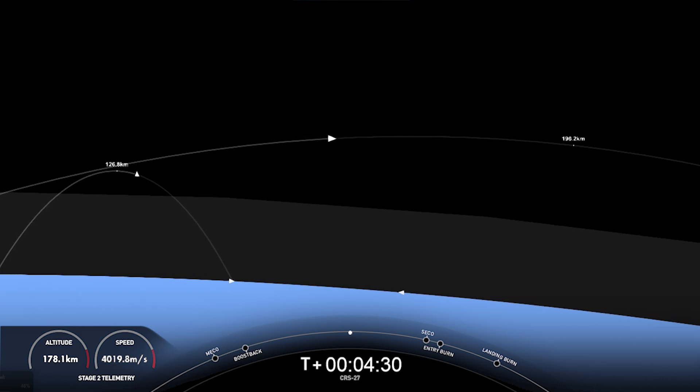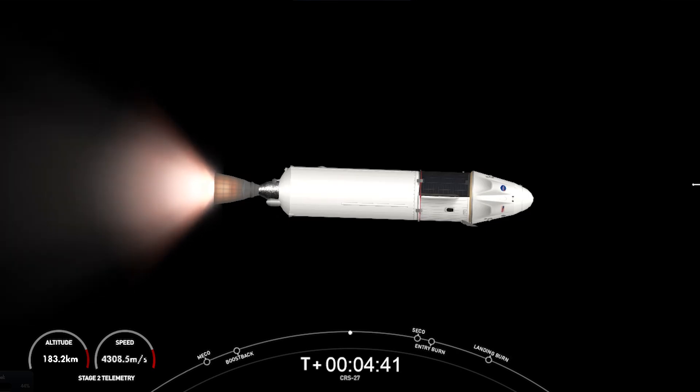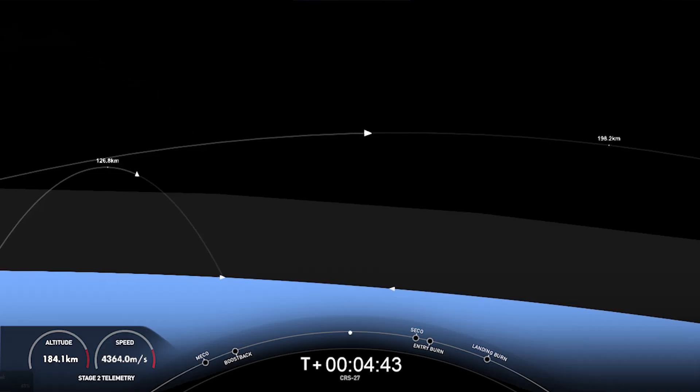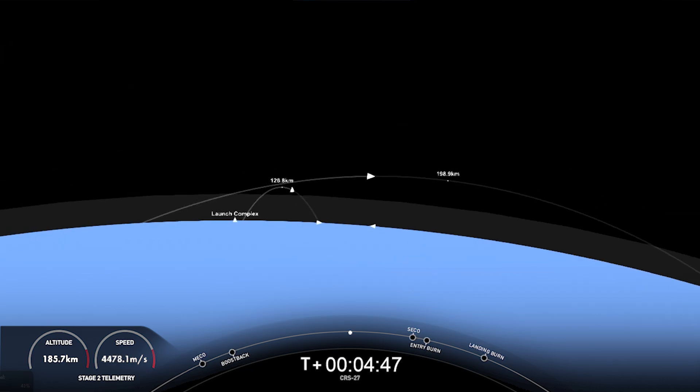Falcon 9 is also equipped with four hypersonic grid fins positioned near the top of the first stage. And once in the atmosphere, Stage 1 is only using the grid fins for steering as it makes its return to Earth. These titanium grid fins will orient the rocket during re-entry and guide the rocket during descent. And there's that callout for nominal trajectories.